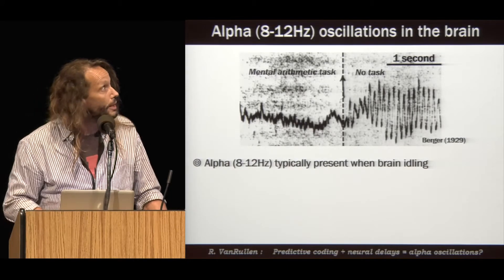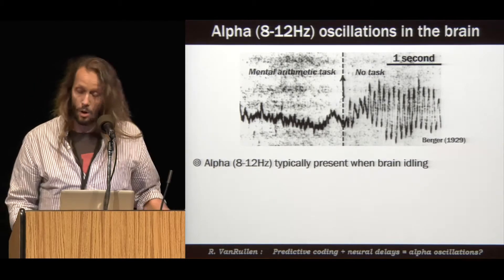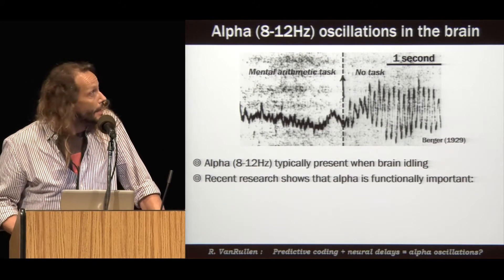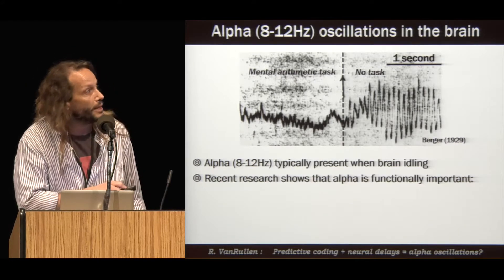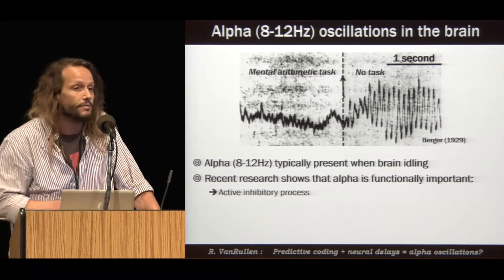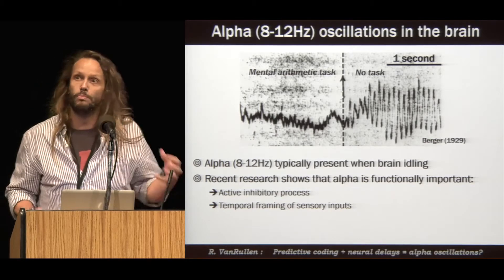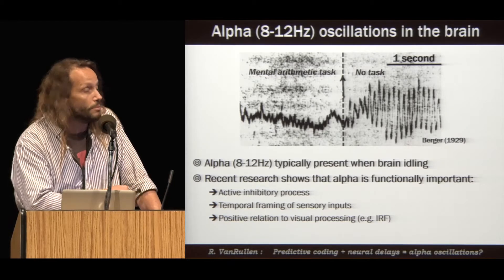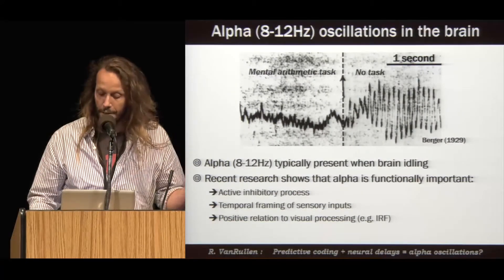It typically increases when the brain is idling, as in this recording, when subjects stop performing a mental arithmetic task, when they close their eyes, or when they don't pay attention to a stimulus. In recent years, however, there's been converging experimental evidence suggesting that the alpha rhythm could play an important functional role in perception and cognition. It looks like it could be involved as an active inhibitory process for irrelevant stimuli, and could serve as a temporal reference or framing mechanism to parse sensory inputs. In some cases, we can even note a positive relation between alpha amplitude and visual processing, just like in the case of impulse response functions that I want to describe now.